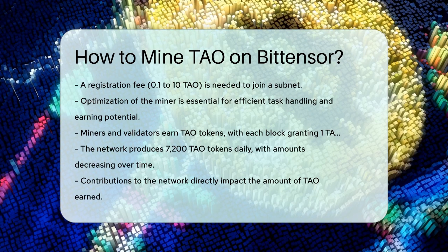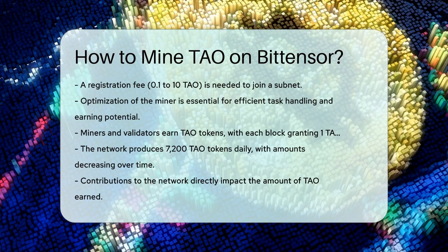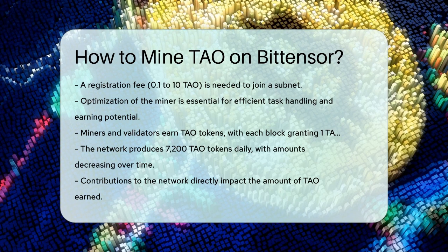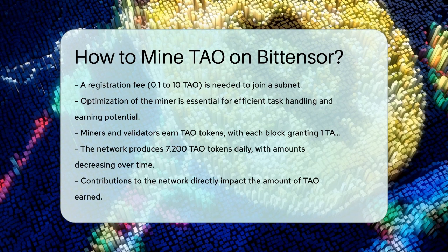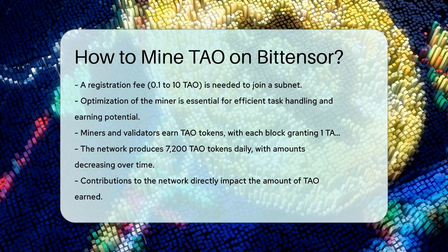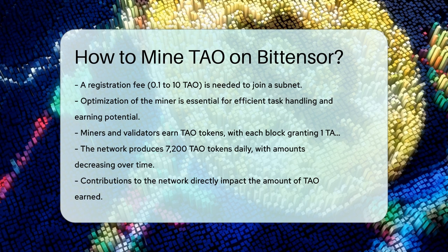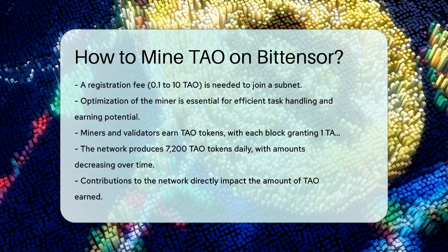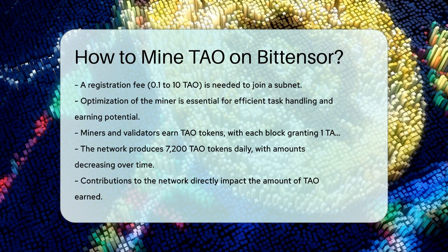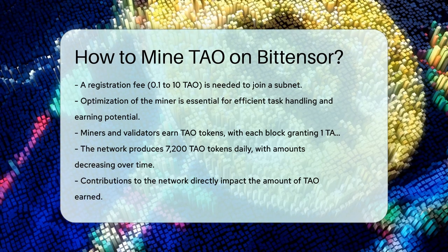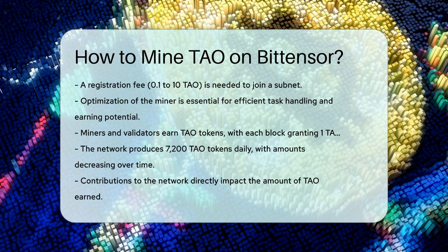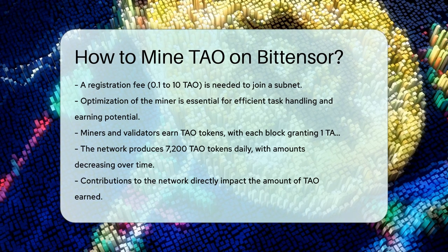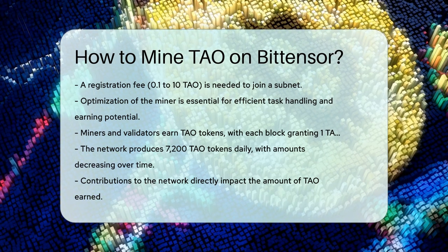Earning rewards. Bittensor rewards miners and validators with TAO tokens. Each block grants one TAO, which is shared equally between miners and validators. The network produces 7,200 TAO tokens daily, and this amount will decrease over time. The more valuable your contributions to the network, the more TAO you'll earn. By following these steps, you can start mining TAO and contribute to the innovative world of decentralized machine learning on the Bittensor network.